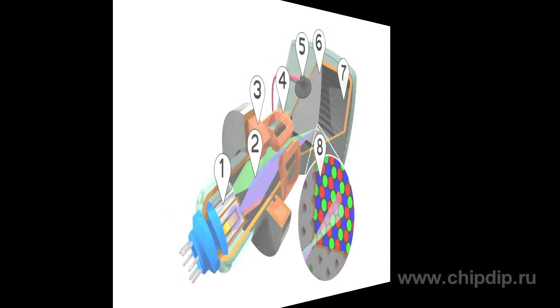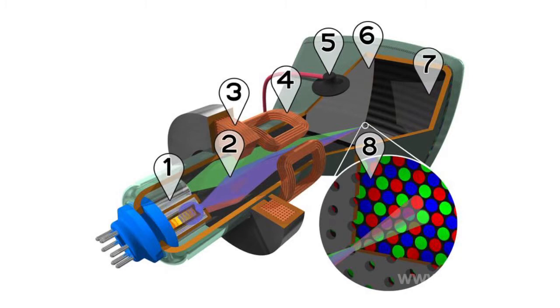In color CRTs with an internal electrostatic shield, it is usually connected to the anode.